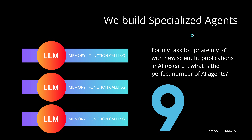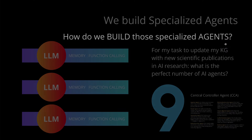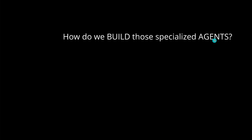So here we have it — the perfect number of agents is nine. We showed eight agents, but of course for the simplest multi-agent case I need a central controller. So we have nine agents with an LLM at the core, each given dedicated tasks. How do we build those specialized agents? Let's come to the beautiful facts of new research.